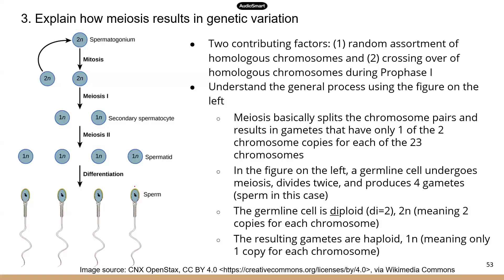There are two contributing factors that result in genetically unique gametes. When different gametes unite through fertilization, the resulting individual will be very different. The two factors are random assortment of homologous chromosomes and crossing over of homologous chromosomes during prophase I.